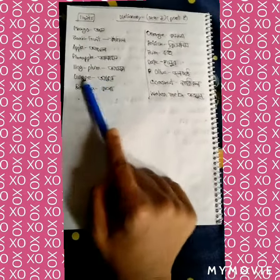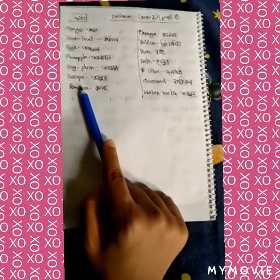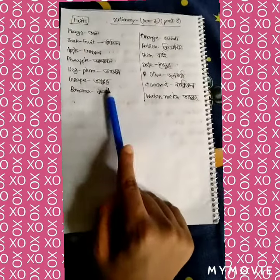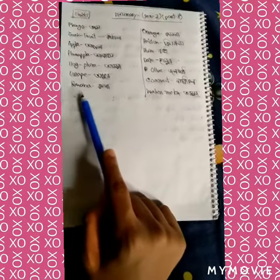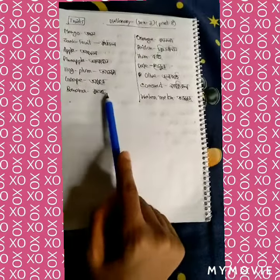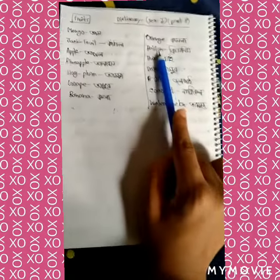Hook plum is aamra, grape is aamur, banana is cola, orange is camula.